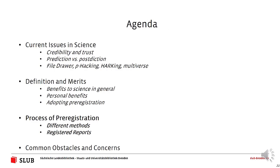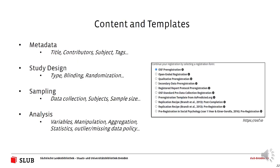Let's look at how pre-registration actually works and what the different methods are, and also get a closer look at registered reports. There is no globally acknowledged standard for pre-registrations. However, most contain metadata, information on the study design, the sampling or data collection and other methods, and also the analysis plan. Studies are largely heterogeneous, so different templates have been developed by experts — a template in this case means something like a form, which poses the right questions and guides you through the process of pre-registration.